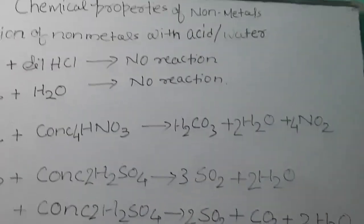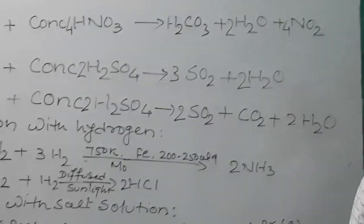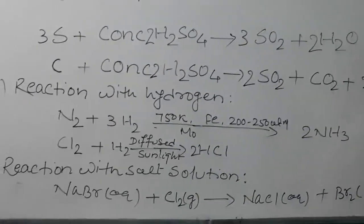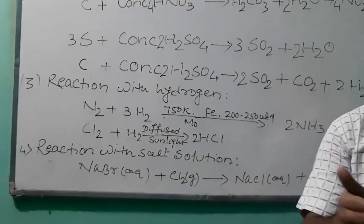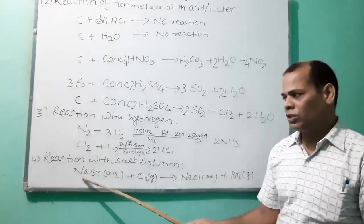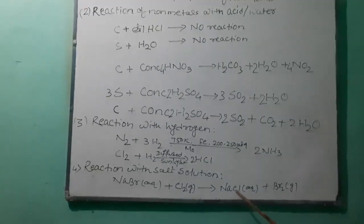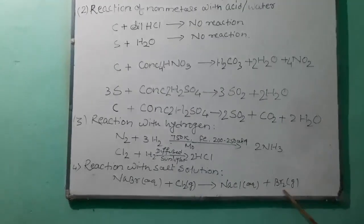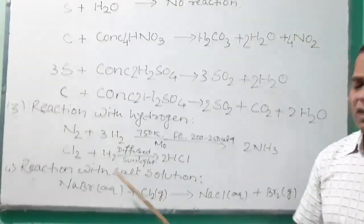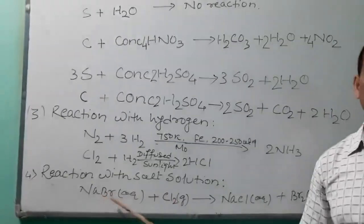Reaction with salt solution: more reactive metal displaces less reactive metal from their salt solution. Similarly, when an aqueous solution of sodium bromide is passed with chlorine gas, it forms aqueous sodium chloride plus bromine. This shows that chlorine is more reactive than bromine, which is why chlorine displaces bromine from sodium bromide.